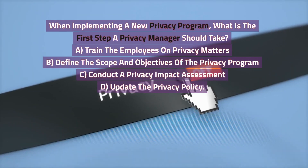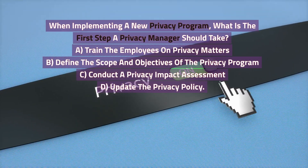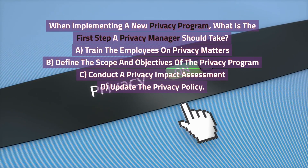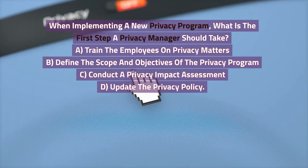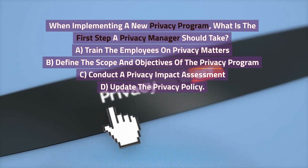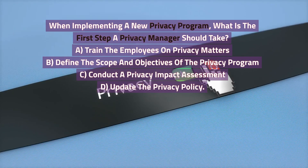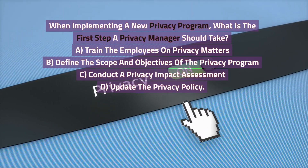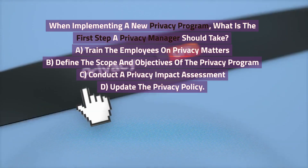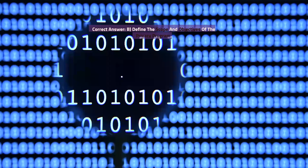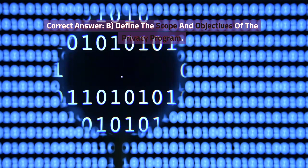When implementing a new privacy program, what is the first step a privacy manager should take? A. Train the employees on privacy matters. B. Define the scope and objectives of the privacy program. C. Conduct a privacy impact assessment. D. Update the privacy policy. Correct answer: B. Define the scope and objectives of the privacy program.